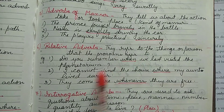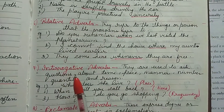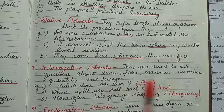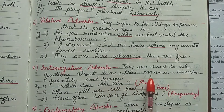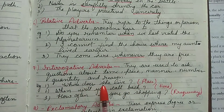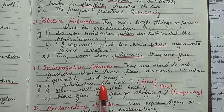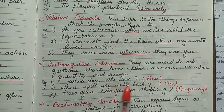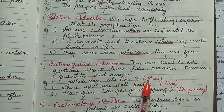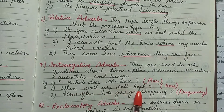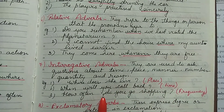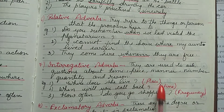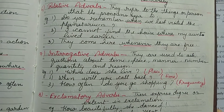Then interrogative adverbs are used to ask questions about time, place, manner, number, quantity, and reason. Examples: 'Where does she live?' — place is asked. 'When will you call back?' — time is asked. 'How often do you go shopping?' — frequency is asked. All these are interrogative adverbs.